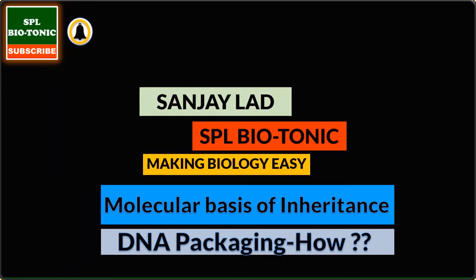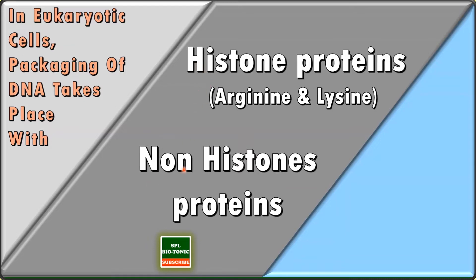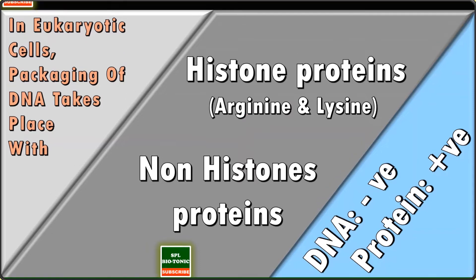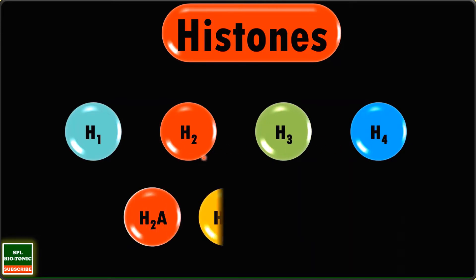In eukaryotic cells, DNA packaging takes place with the help of two types of proteins: histone proteins and non-histone proteins. DNA is negatively charged due to its phosphate groups, whereas to package this negatively charged DNA we require positively charged proteins such as histone proteins. Histone proteins are positively charged due to amino acids such as arginine and lysine.